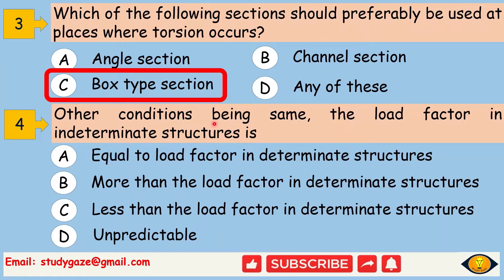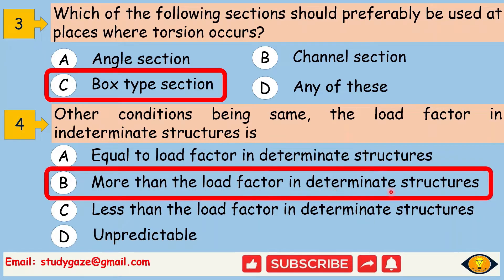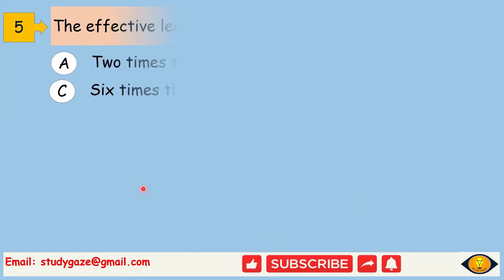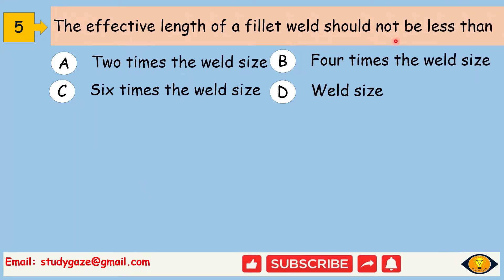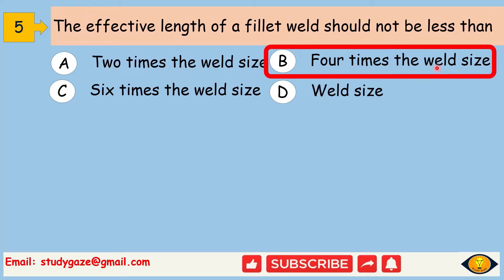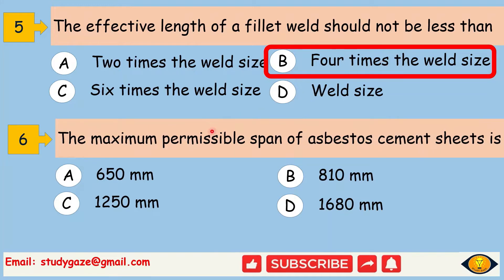Next, other conditions being same, the load factor in indeterminate structure is more than the load factor in determinate structure. Next, the effective length of a fillet weld should not be less than 4 times the weld size. Next, the maximum permissible span of asbestos cement sheets is 1680 mm.